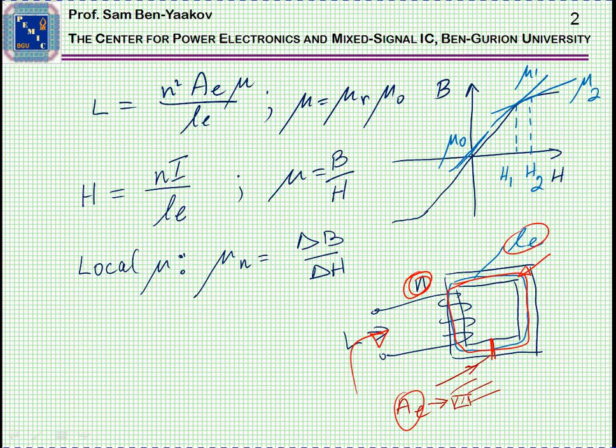The inductance that we are going to see is expressed in this equation, which says that the inductance is equal to the number of turns squared, the cross-section area of the core, mu is the permeability, and LE is the magnetic path length.